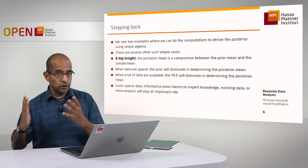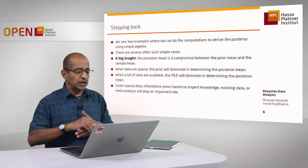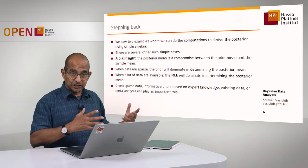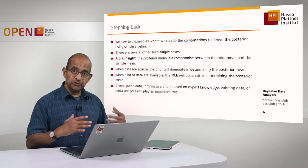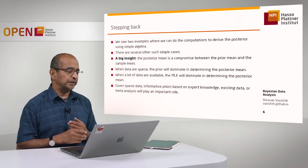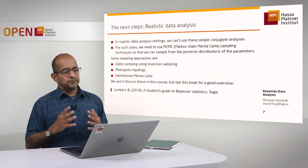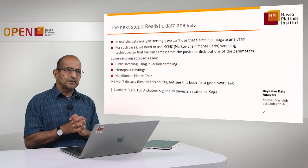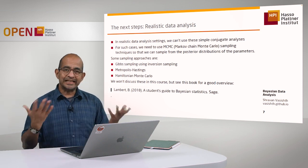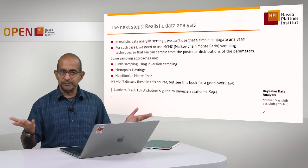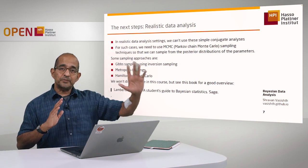When data are sparse, we go towards the prior — the posterior distribution will be closer to the prior because we're more dependent on it than the actual data. When we have a lot of data, the posterior distribution will reflect the maximum likelihood estimate from the data. This is a very important insight.